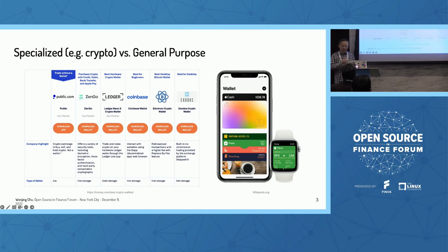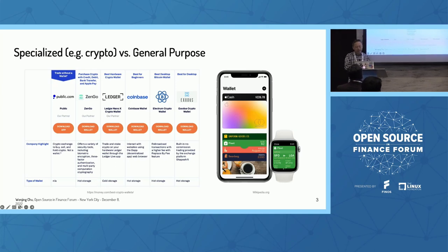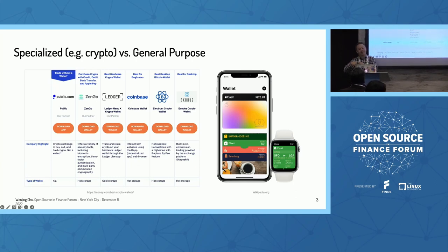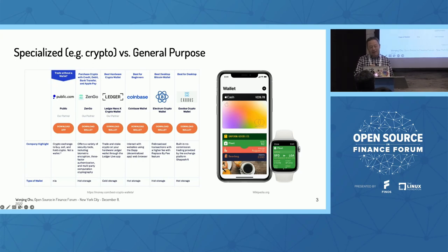I'm going to start with the general purpose portion. There are so-called specialized wallets — we're using crypto as an example, because a lot of people automatically start thinking about that. I list a bunch of them. There are a lot of different wallets out there, many different types — people talk about whether you have custody or it's actually a proxy to another account, and whether the money is actually in your wallet.